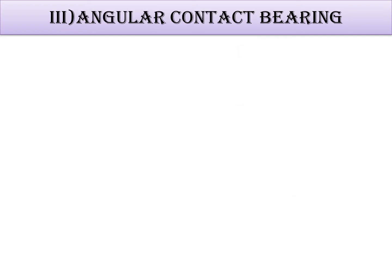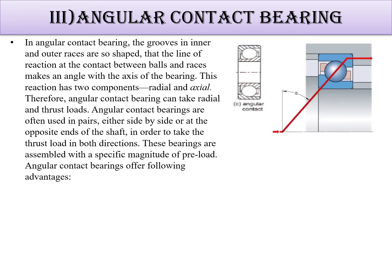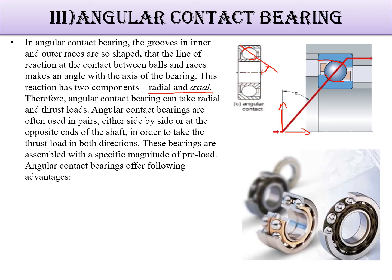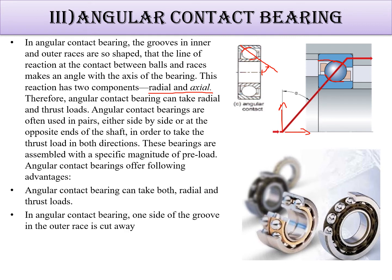Next is the angular contact bearing. In this bearing, the outer race and inner race both have a curve such that if you draw a normal, you find an angle — that's why it is called angular contact bearing. This curve creates an angle, and you can resolve two force components here. These bearings can be used for both radial and axial load. One side of the groove in the outer race is cut away to allow axial loading.